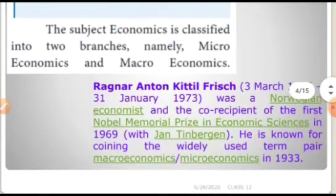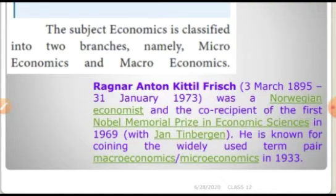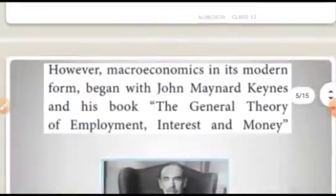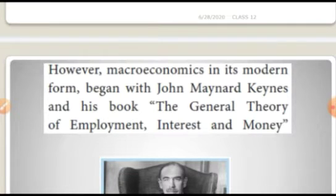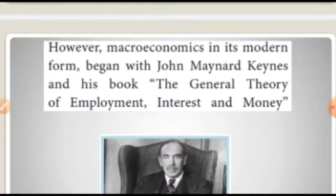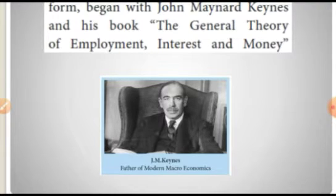The terms micro and macro were first coined by Ragnar Anton Kittelfrich. He is a Norwegian economist who also received the Nobel Memorial Prize in Economic Science in the year 1969 with John Tinbergen. However, the fully modern theories of macroeconomics come from the economist J.M. Keynes in his book The General Theory of Employment, Interest and Money, published in 1936. So he is the father of modern macroeconomics.